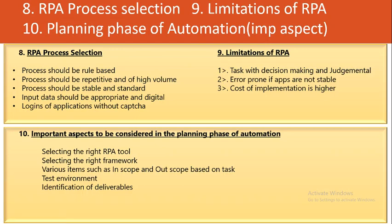Question eight: RPA process selection — what criteria make a process fit for automation? The process should be rule-based and repetitive with high volume. The process should be stable and standardized. Input data should be appropriate and digital. The logins of the application should not require CAPTCHA. These are the main criteria you must consider before selecting a process for robotic process automation.